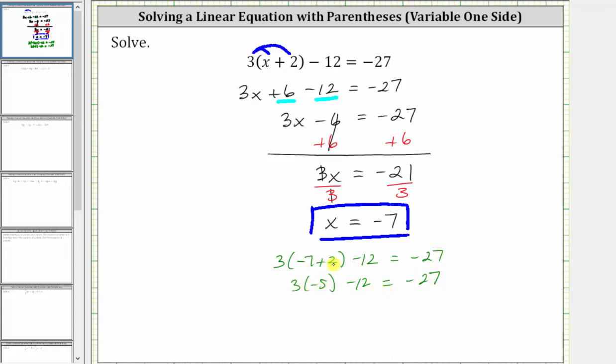Next, three times negative five is negative 15, giving us negative 15 minus 12 equals negative 27. And then finally on the left, negative 15 minus 12 is negative 27. Negative 27 equals negative 27 is true, verifying the solution is correct.